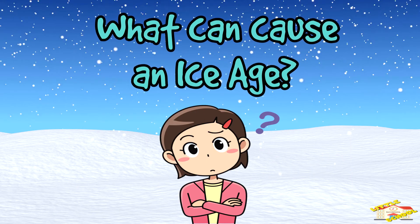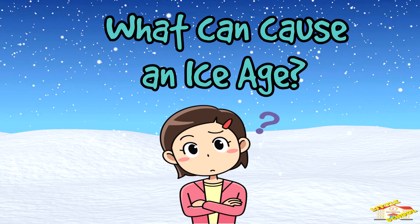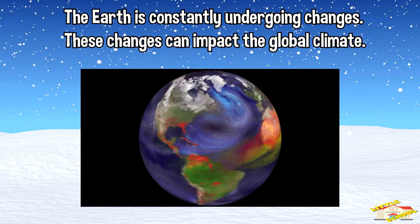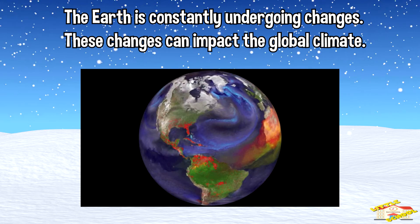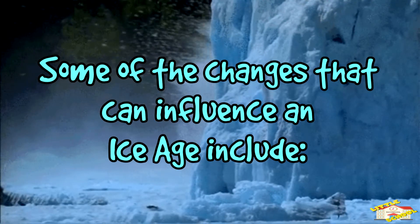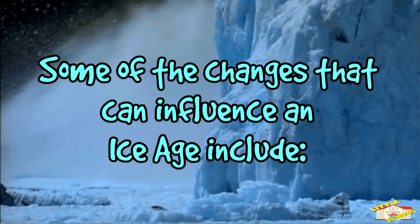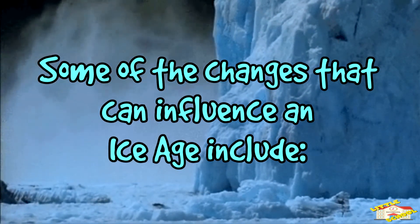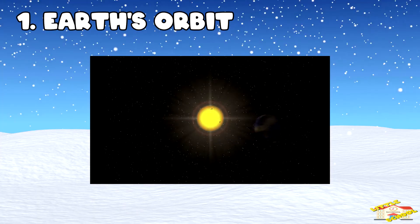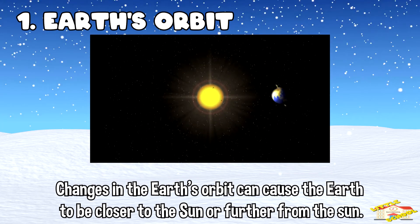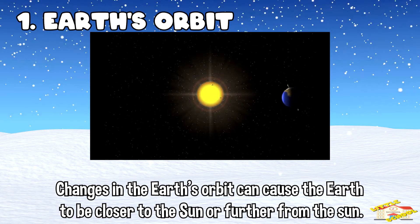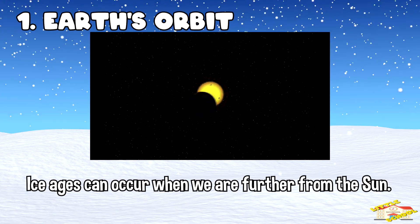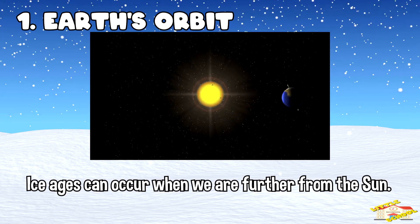What can cause an ice age? The Earth is constantly undergoing changes. These changes can impact the global climate and energy. Some of the changes that can influence an ice age include Earth's orbit. Changes in the Earth's orbit can cause the Earth to be closer to or further from the sun. Ice ages can occur when we are further from the sun.